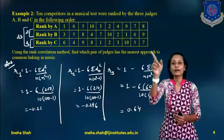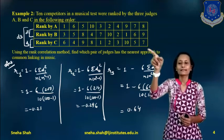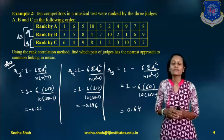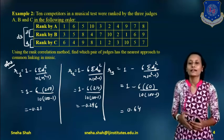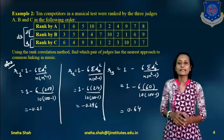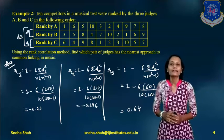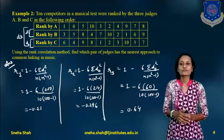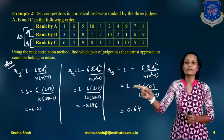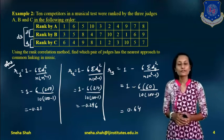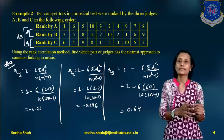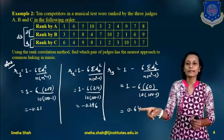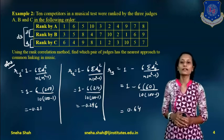Similarly, we find the rank correlation between B and C using D2. R2 equals 1 minus 6 sigma D2-squared divided by n into n-squared minus 1, where n equals 10. The value of summation D2-squared equals 24. So the value of R2 equals minus 0.296.